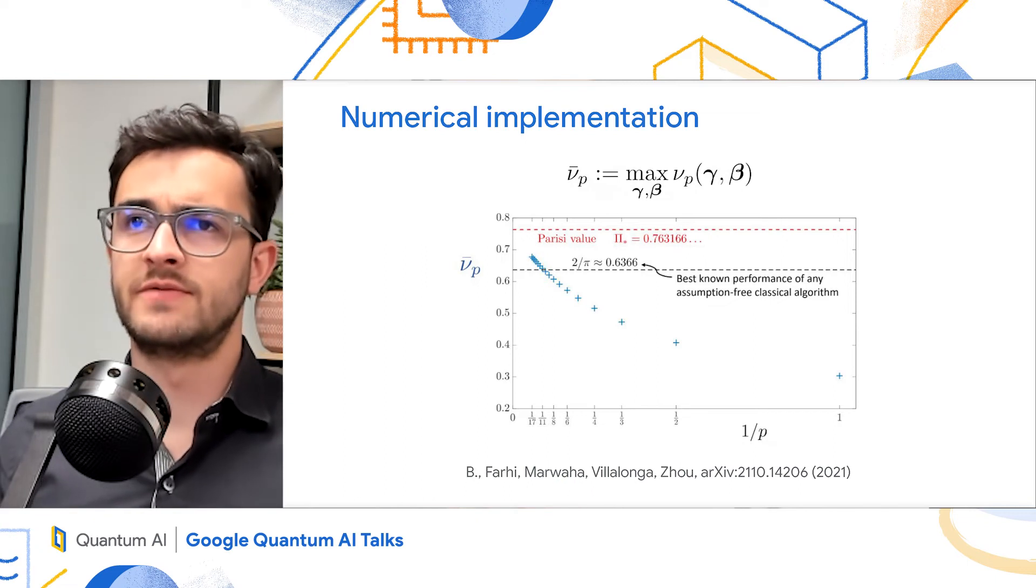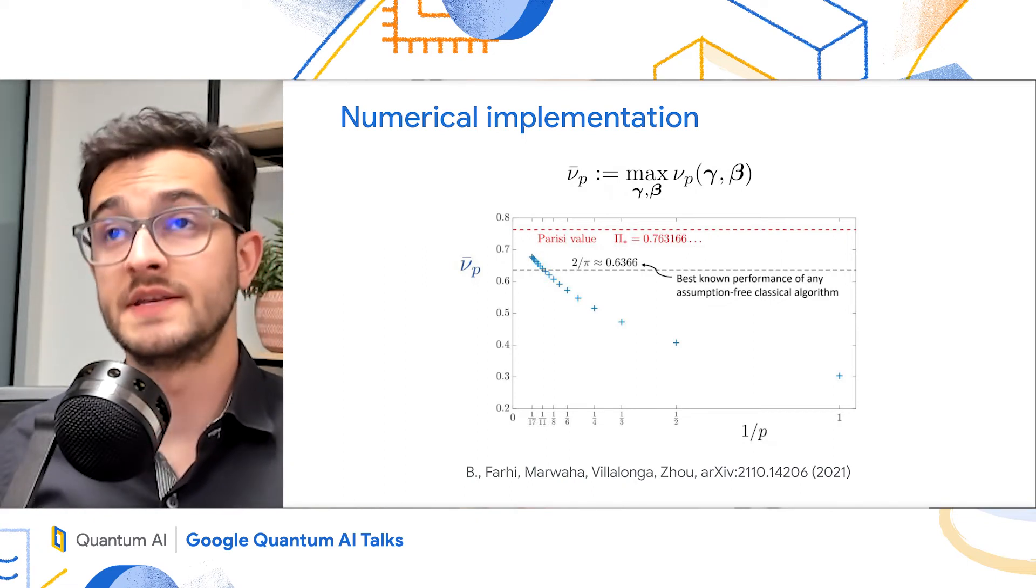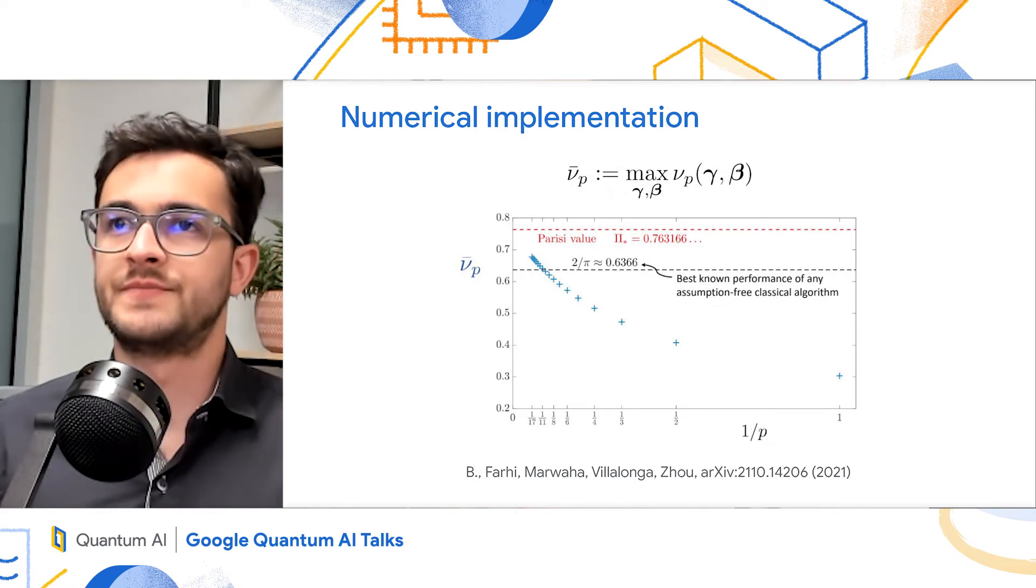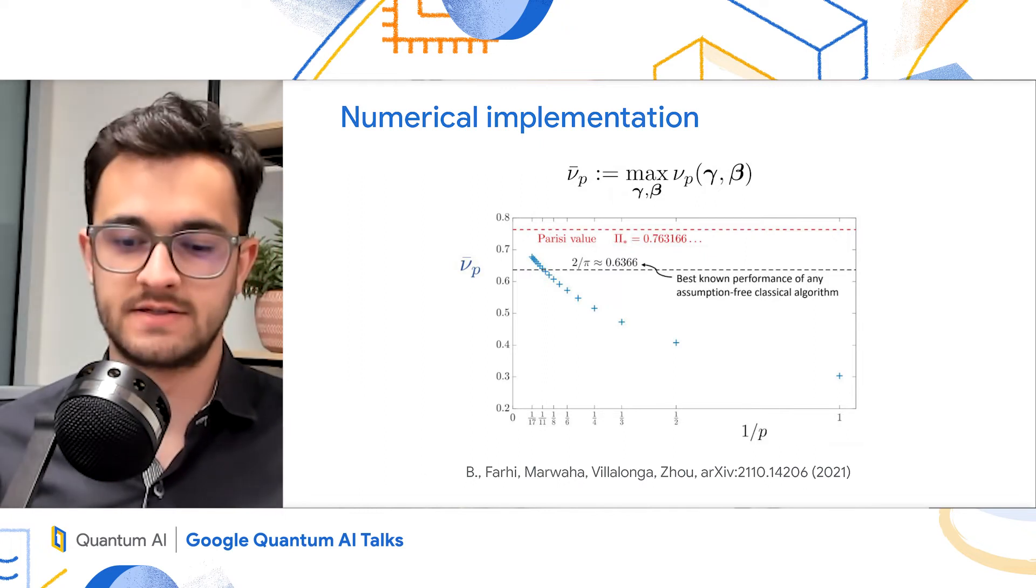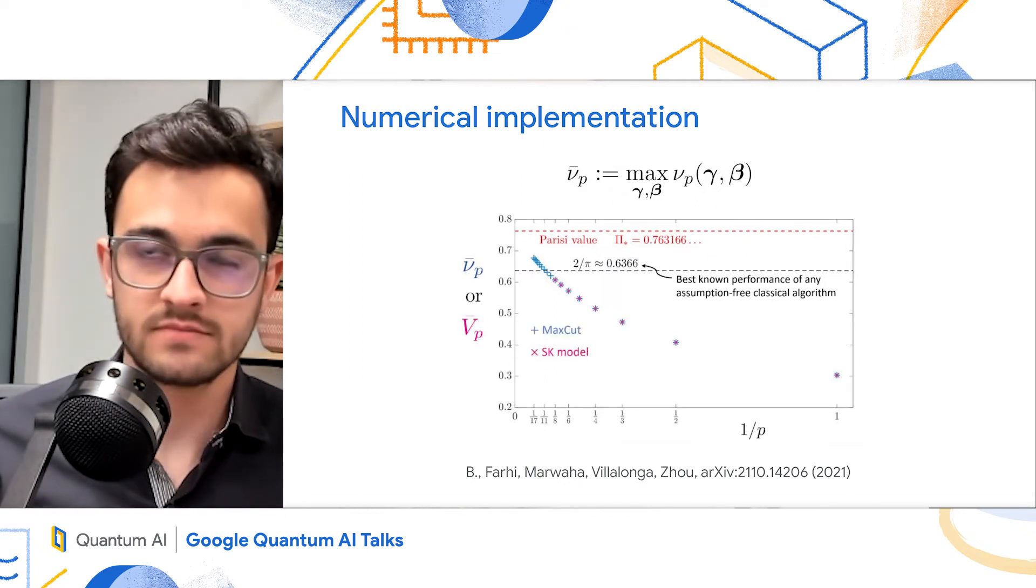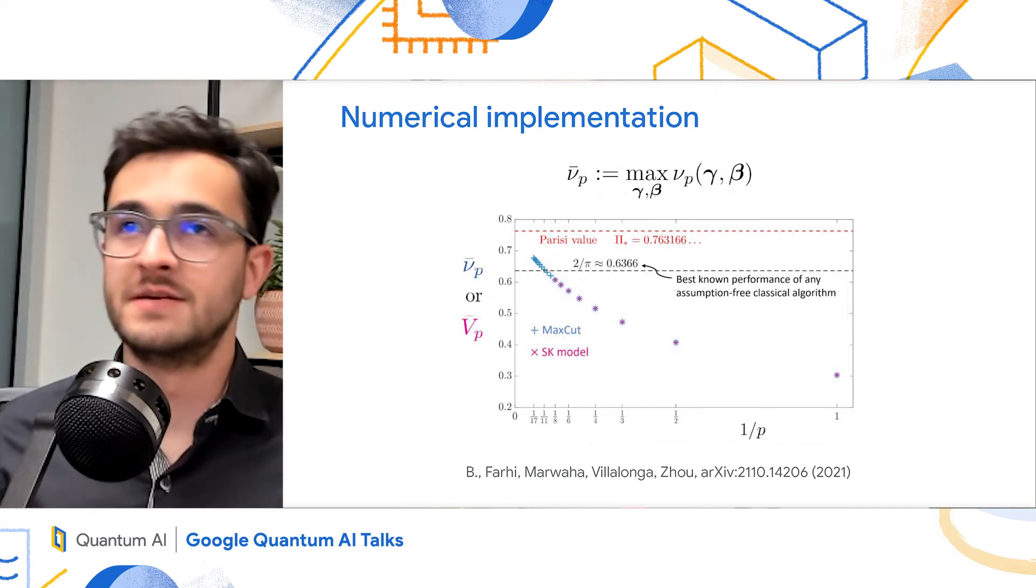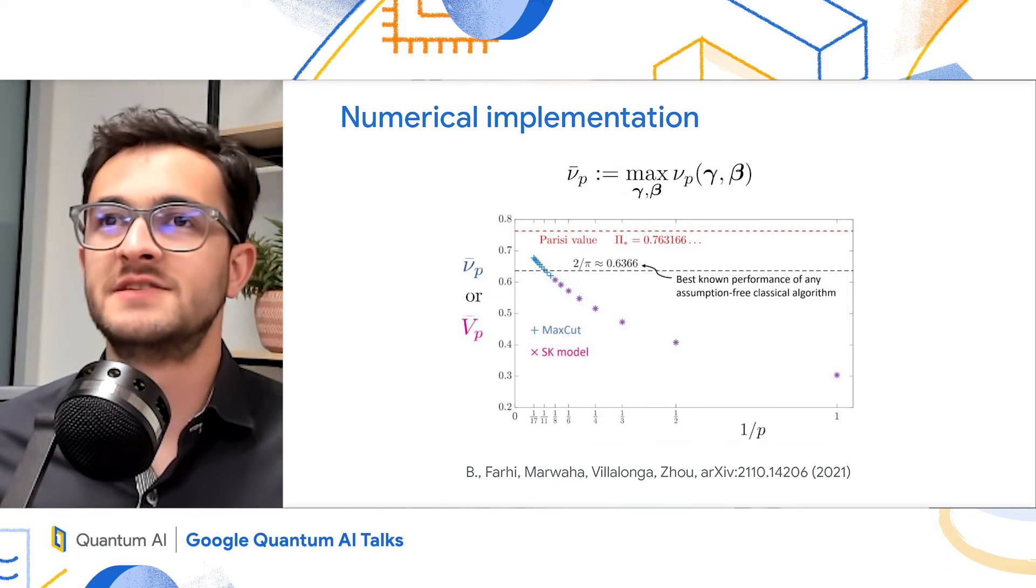Now, if you remember the plot that I showed before for the performance of the QAOA on the SK model, the plots are very similar. So here's what I'm going to do. I will overlay both plots. And here's what happens. You can see they're exactly the same plot.